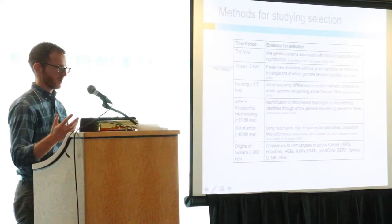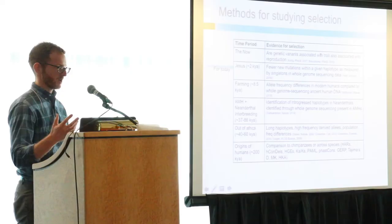The ENIGMA Evolution Group seeks to tie those genetic variants associated with gross brain structure to regions of the genome that we know have been selected for or against. There are four lead sites participating in the ENIGMA Evolution Working Group: the Max Planck Institute in the Netherlands, UC Irvine, UNC Chapel Hill, and Yale University.